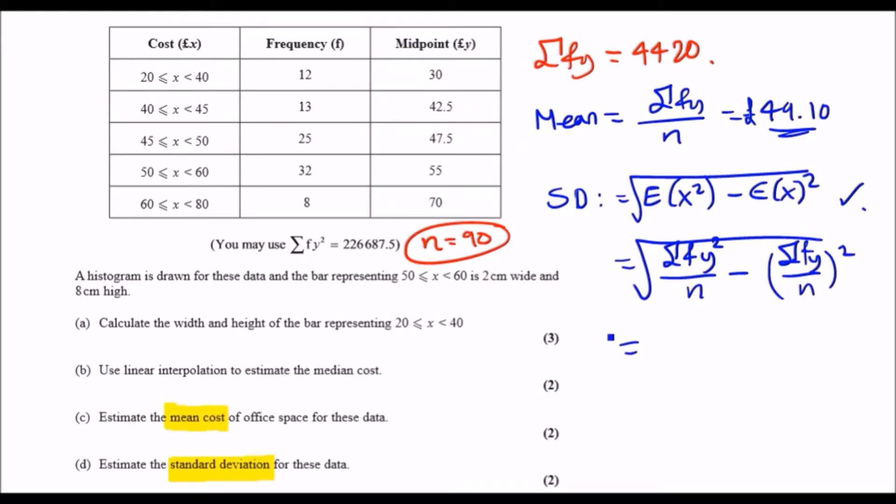So what do we have? It would just be, it's a long one, so your calculator should be 226,687.5 over n which is 90, minus the mean. So just be your answer squared, so the mean as a fraction was actually 4420 over 90 squared. Sometimes better to have exact answers.